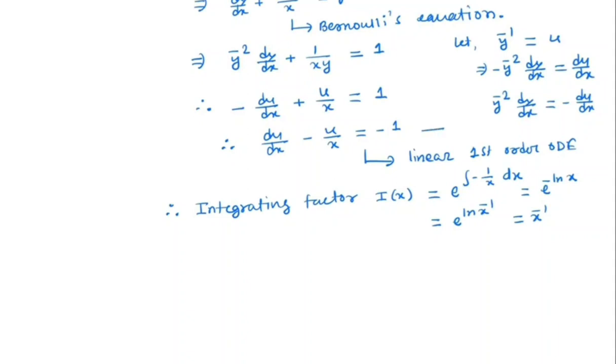So, let us denote this equation by 1. So, multiplying I(x) to the both side of 1, we get d/dx of u x inverse is equal to minus x inverse.